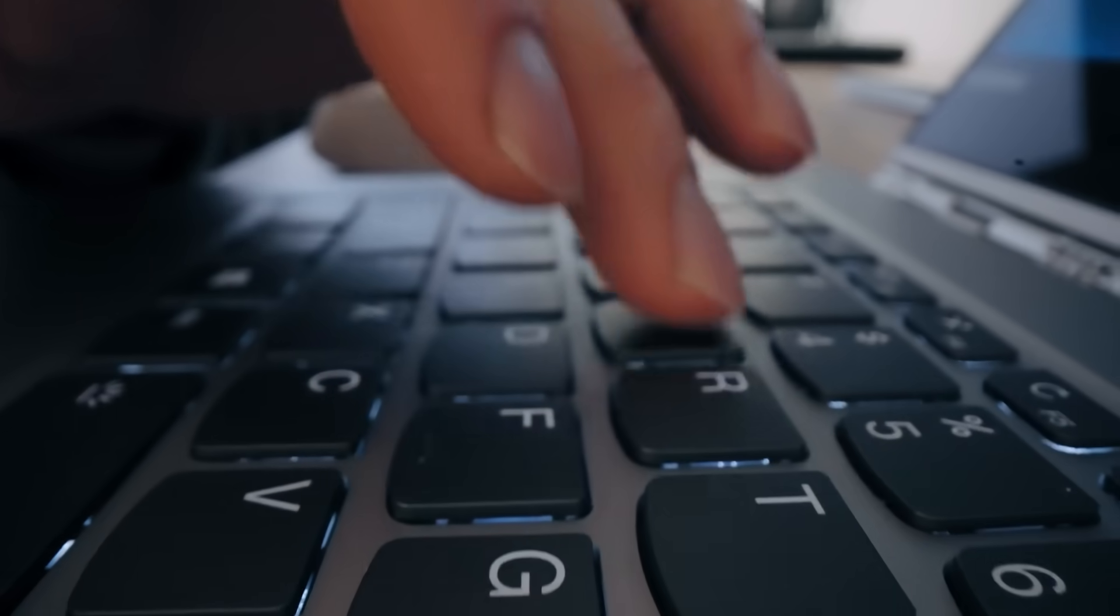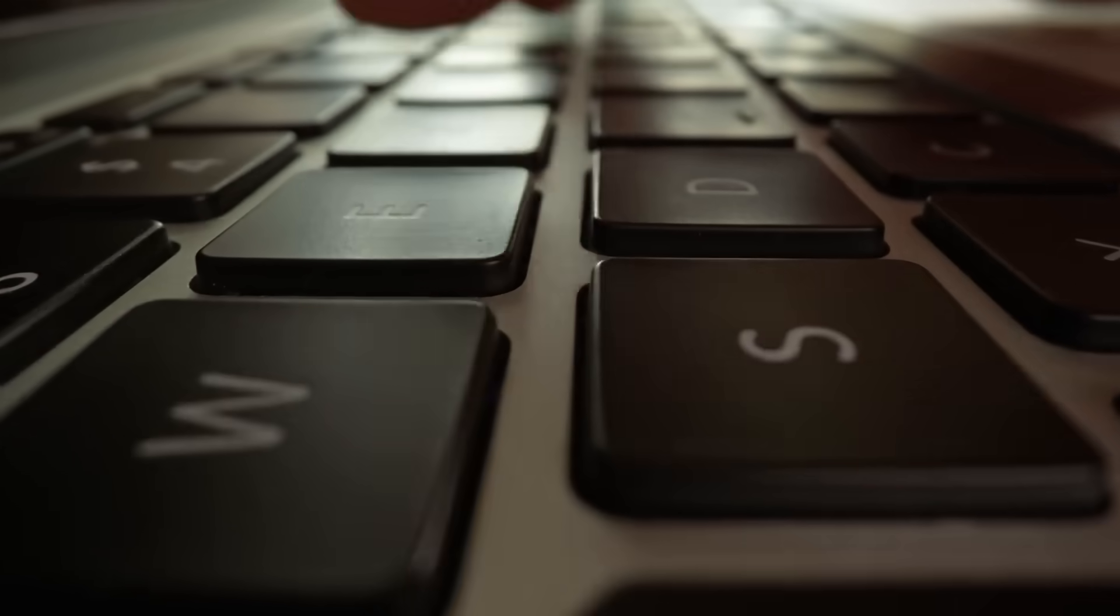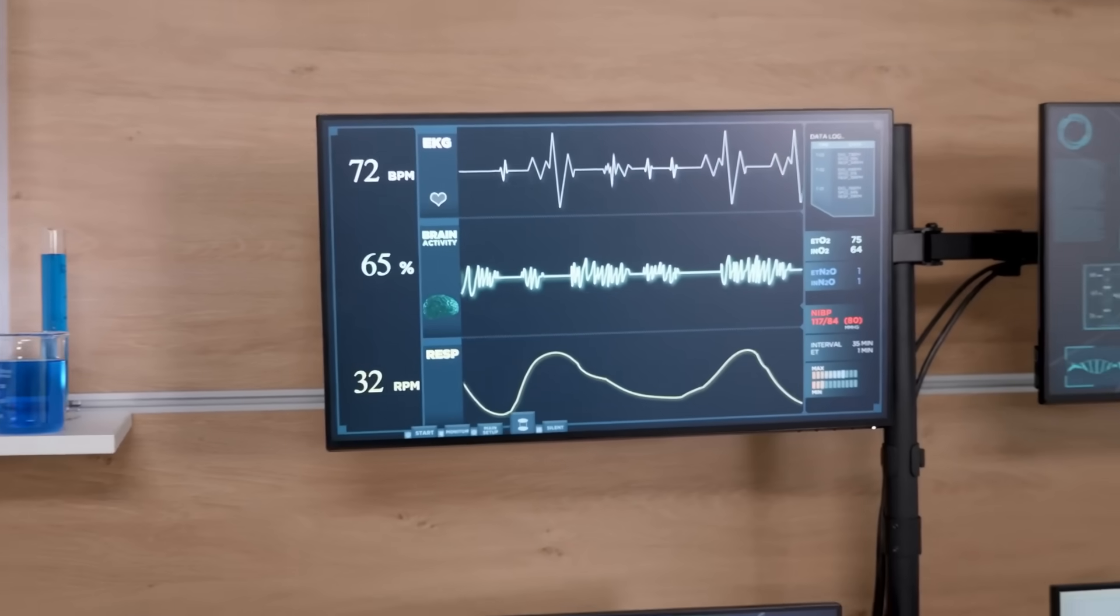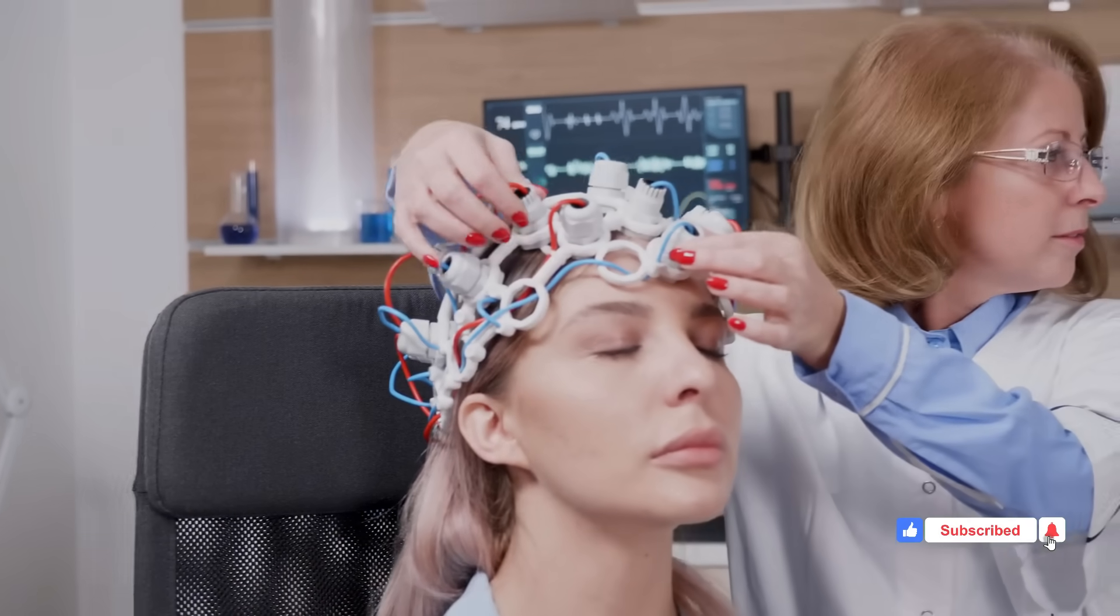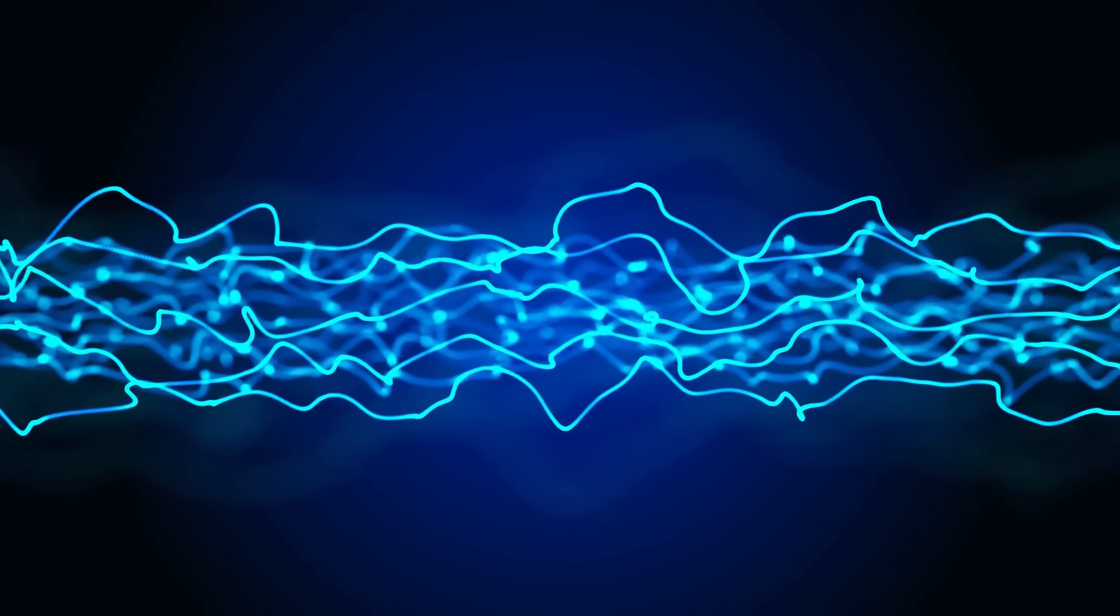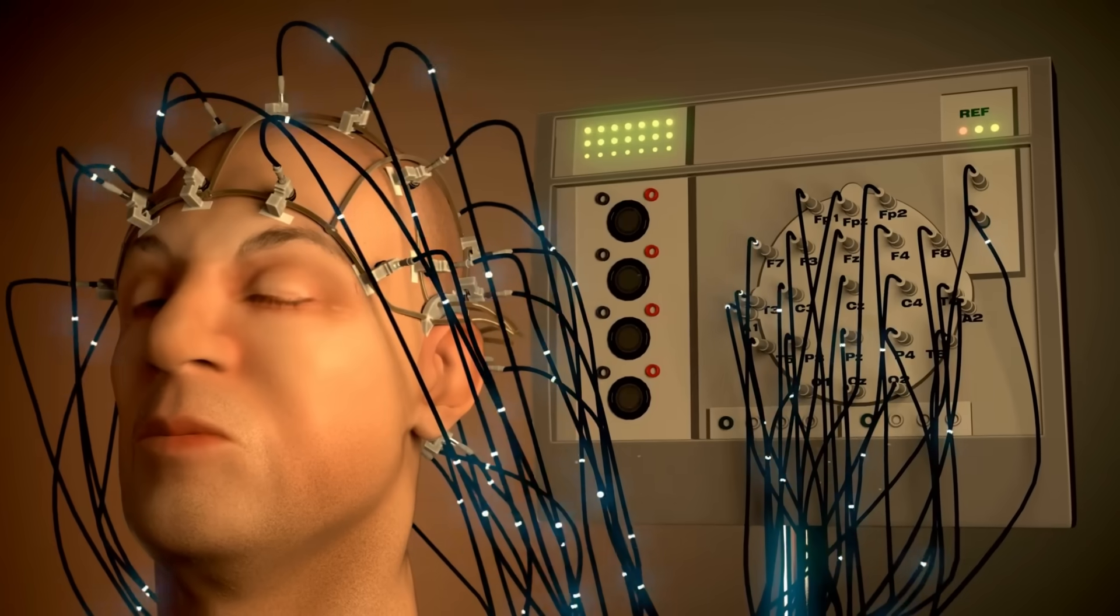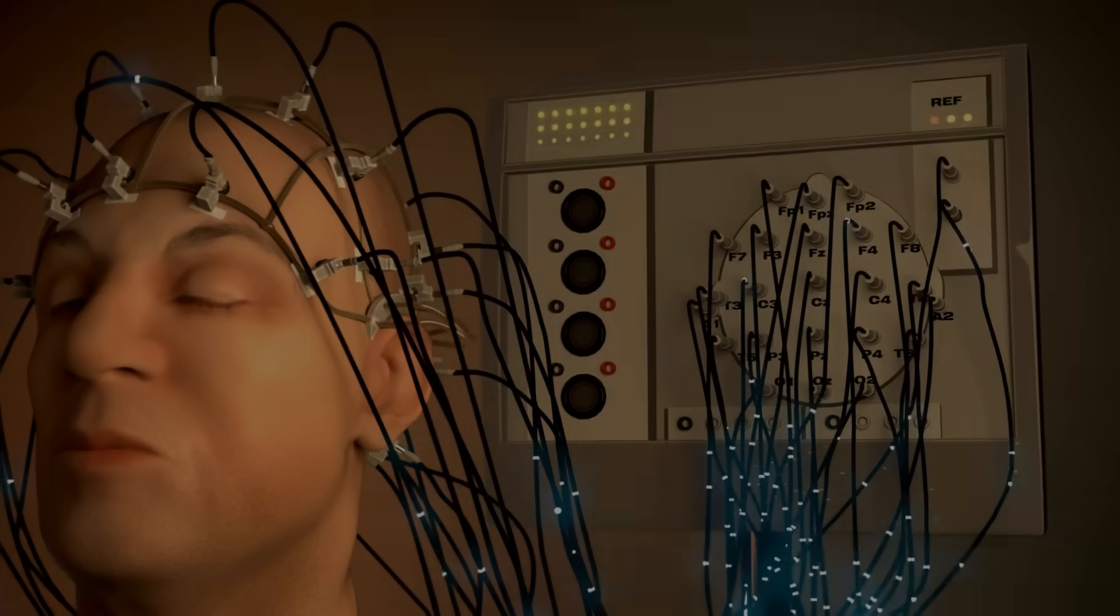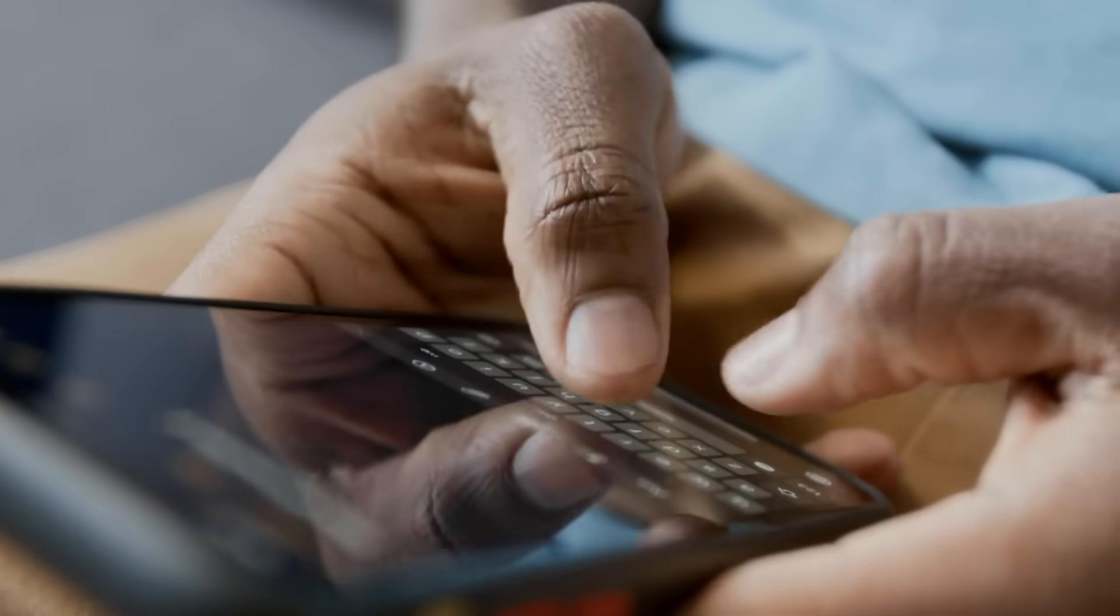But on a keyboard, every key feels identical. Click, click, click. No cognitive effort required. And here's where it gets really interesting. Scientists monitoring brain waves discovered that handwriting produces specific electrical patterns, theta waves and alpha waves, that pulse in harmony across your entire brain. These aren't random signals. Theta waves encode new information and boost your working memory. Alpha waves cement that information into long-term storage. These exact patterns are the signature of deep learning. They don't appear when you type.